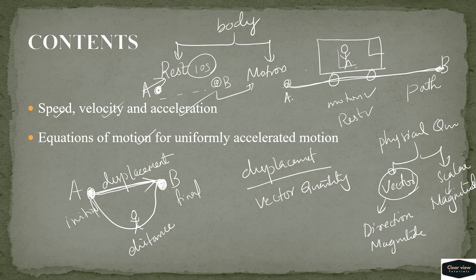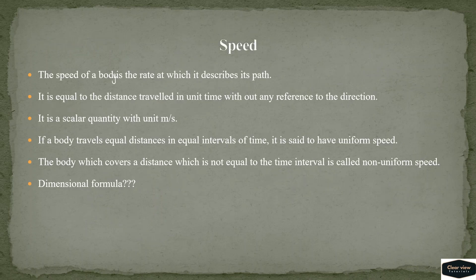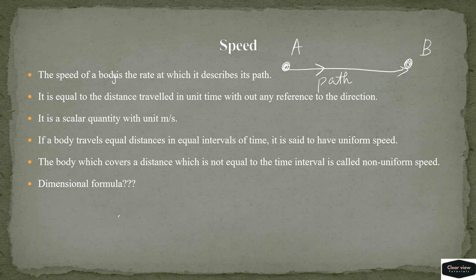Now we start with speed. What is speed? The object is traveling from an initial position to position B. The path traveled in unit time is called speed. Speed is the distance covered divided by time taken.